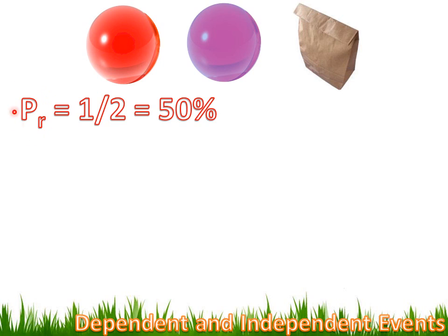In case you haven't seen this notation before: P stands for probability, and the subscript R stands for the probability of drawing a red marble. If I wanted the probability of drawing a purple marble, it would be P sub P.